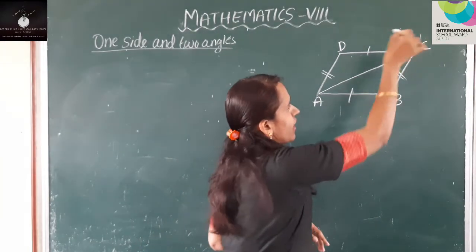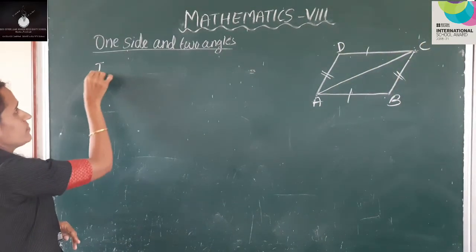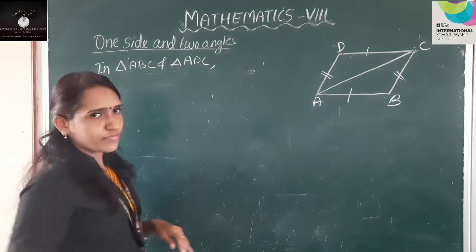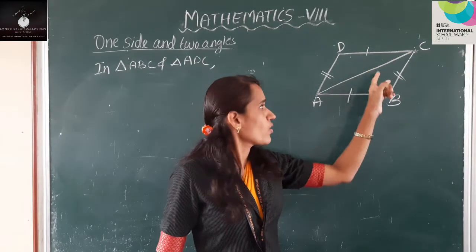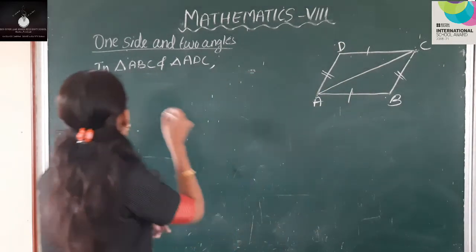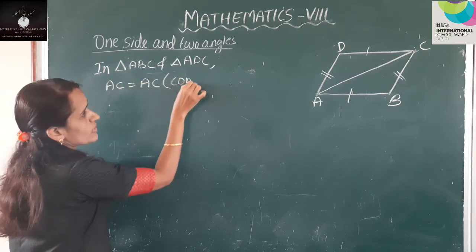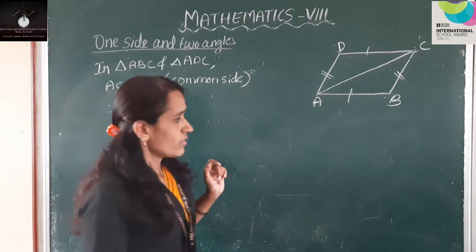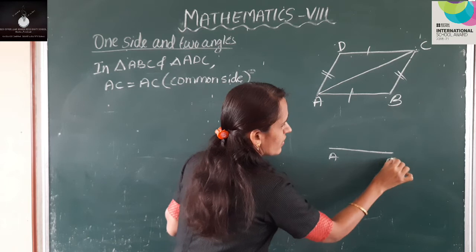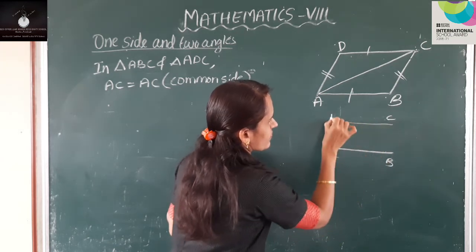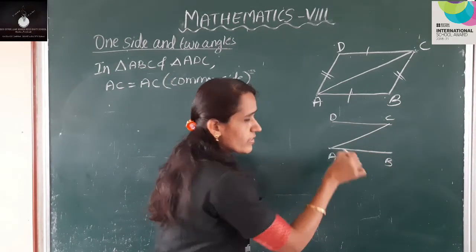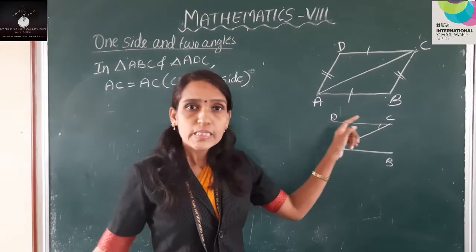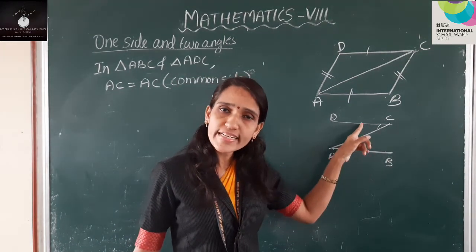Consider triangle ABC and triangle ADC. AC is the common side of these two triangles. The parallels AB and CD, cut by the transversal AC, make angles CAB and DCA. These angles are alternate angles, and alternate angles are equal. So angle CAB is equal to angle DCA. Similarly, the parallels AD and BC, cut by the transversal AC, make angles DAC and ACB. These angles are also alternate angles, so angle ACB is equal to angle DAC.